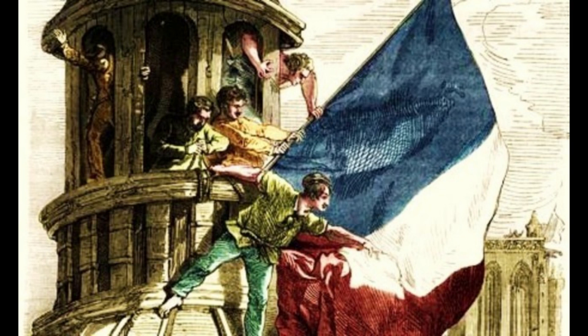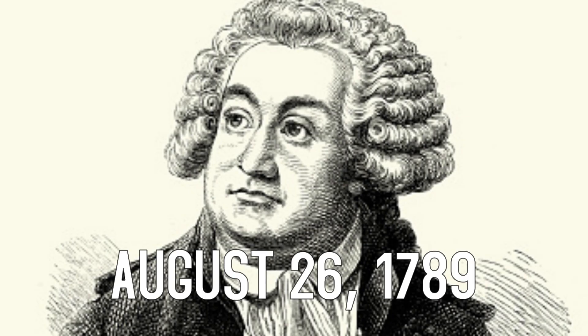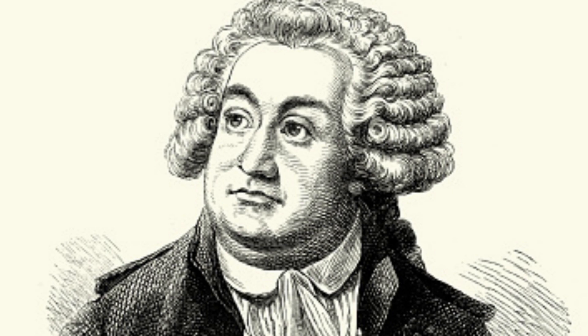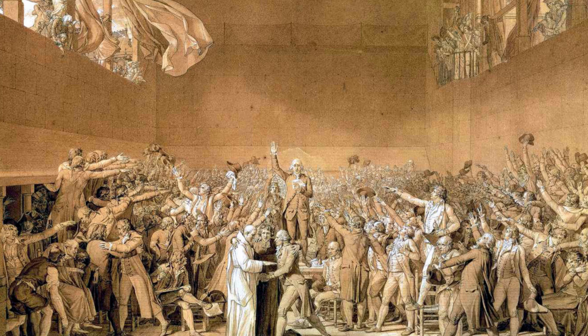Civil authority continued to fall apart as unrest grew within the kingdom. The aristocracy began to flee Paris, as they were frequently attacked and faced general animosity. On August 26th, 1789, Mirabeau, now the most prominent member of the National Assembly, published the first Statement of Rights, called the Declaration of the Rights of Man and of the Citizen, and the Assembly turned their focus to creating a shiny new French constitution.